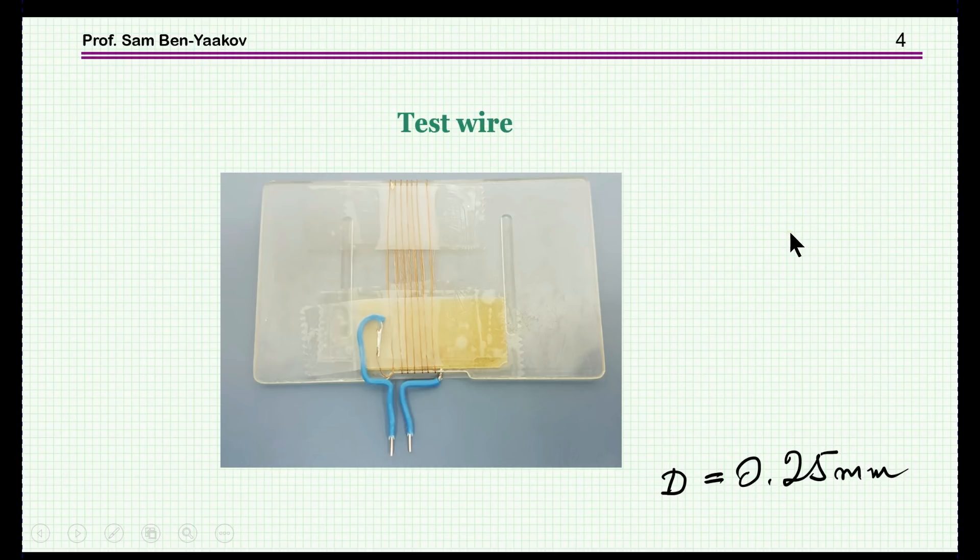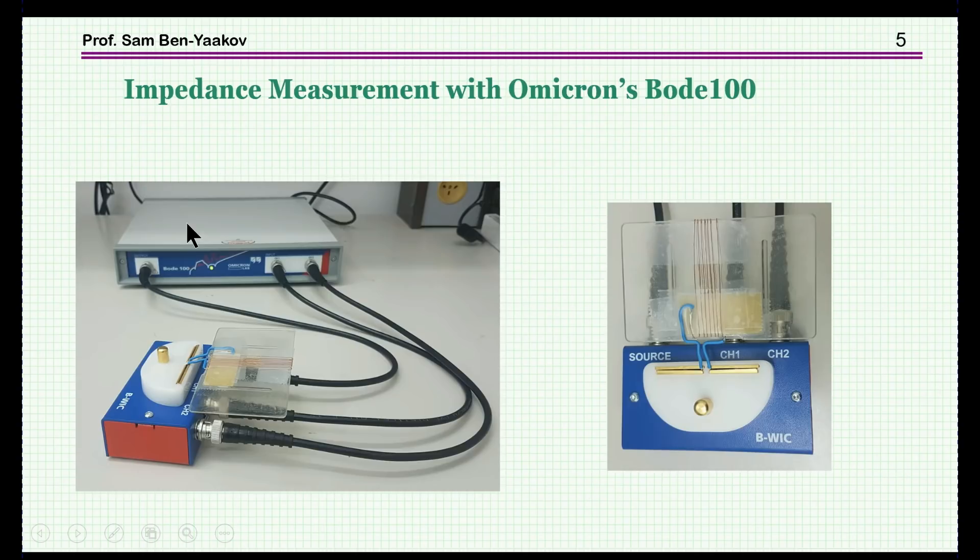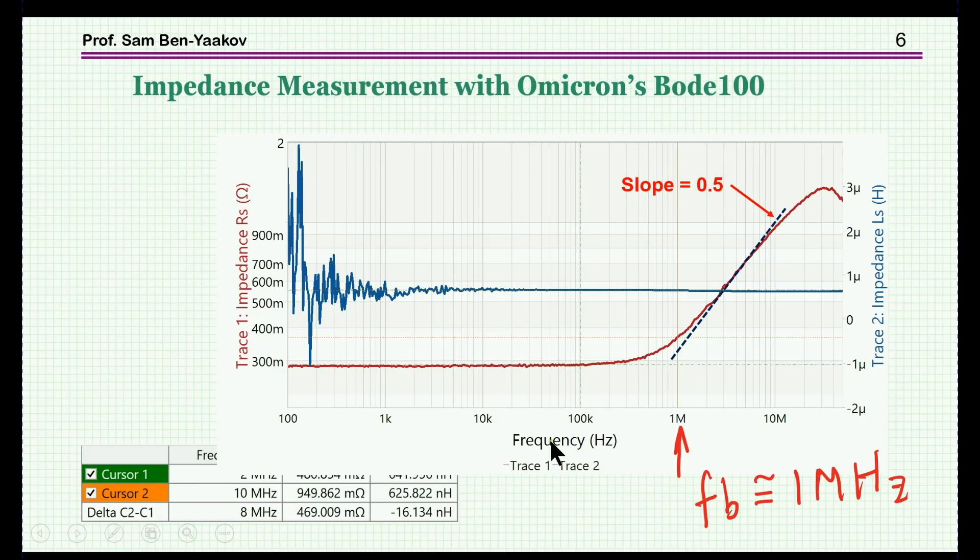Now, we have measured such resistances. Here is one example. This is a copper wire wrapped around a plastic piece, a thin piece so that the inductance will be small, and then we've used the Omicron Bode 100, a network analyzer which has an impedance measurement fixture. Here is this fixture to which we have connected the wire.